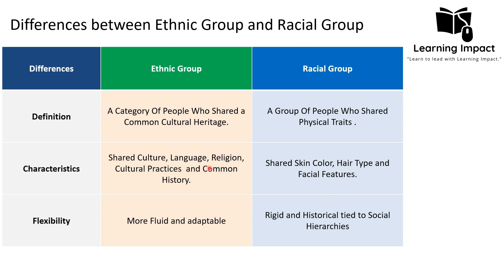For example, in Pakistani society there are various groups based on shared language — for example, the Pashtun group is an ethnic group because they share a common language. In the case of the racial group, the African-American people share a skin color, which distinguishes them from white people and forms a separate racial group known as the Black race.